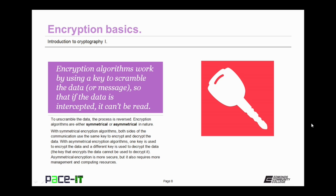Encryption algorithms are either symmetrical or asymmetrical in nature. With symmetrical encryption algorithms, both sides of the communication use the same key to encrypt and decrypt data. With asymmetrical encryption algorithms, one key is used to encrypt the data and a different key is used to decrypt the data. The key that encrypts the data cannot be used to decrypt it. Asymmetrical encryption is much more secure, but it also requires more management and computing resources. Often, asymmetrical cryptography is used to establish a symmetrical encryption method.